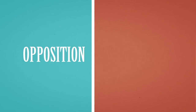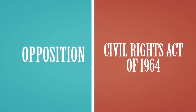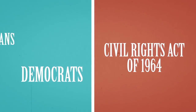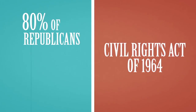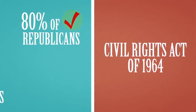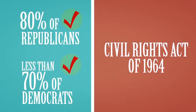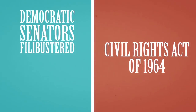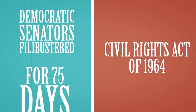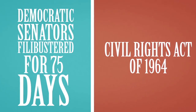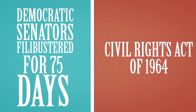A few decades later, the only serious congressional opposition to the landmark Civil Rights Act of 1964 came from Democrats. Eighty percent of Republicans in Congress supported the bill. Less than 70 percent of Democrats did. Democratic senators filibustered the bill for 75 days until Republicans mustered the few extra votes needed to break the logjam.